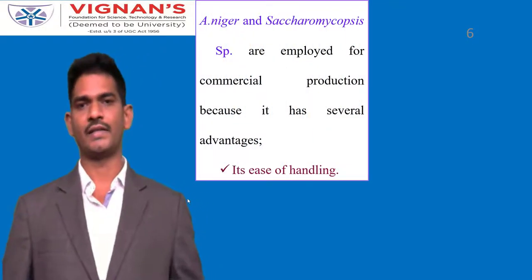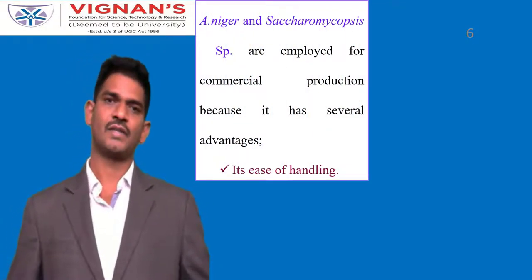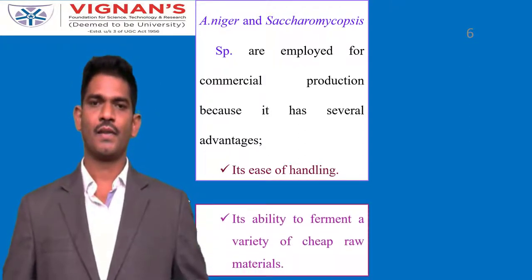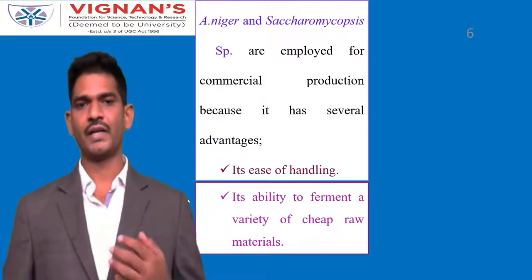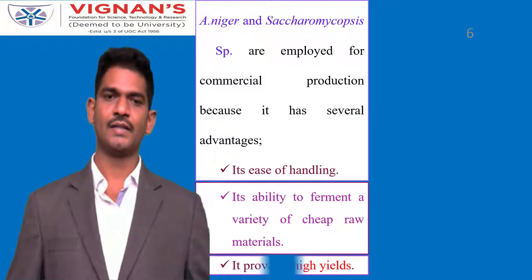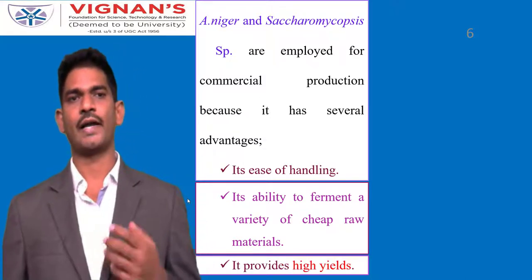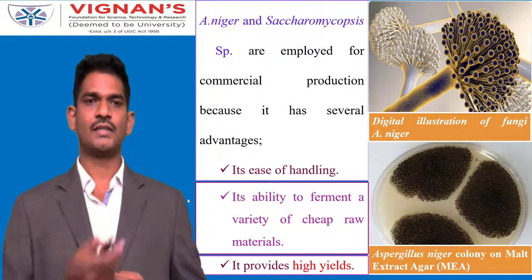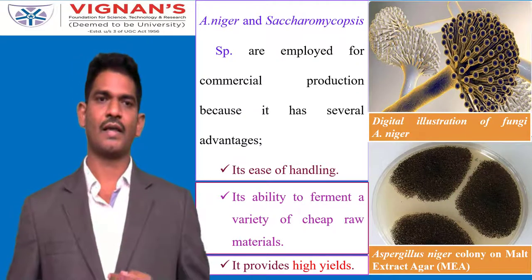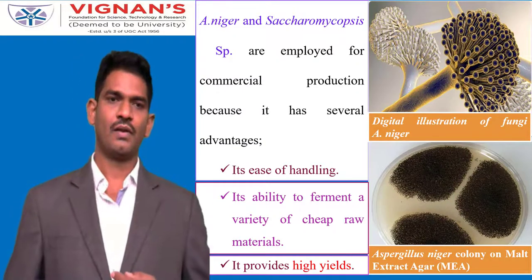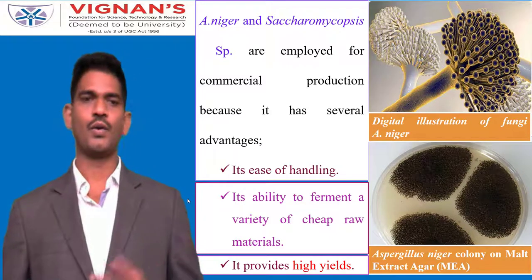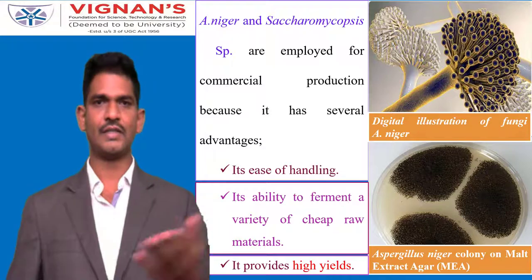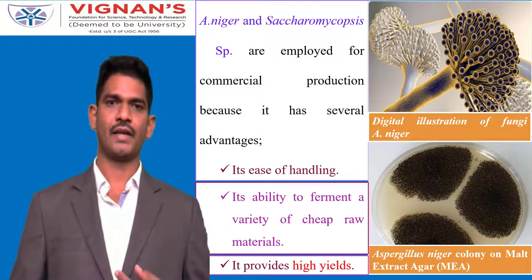Aspergillus niger is preferred because handling it at lab scale is easy, it has the ability to ferment a variety of cheap raw materials, and it can produce high quantities of citric acid. You can see the digital illustration of the Aspergillus niger and also see it grown on malt extract on a plate, indicated by its black color.